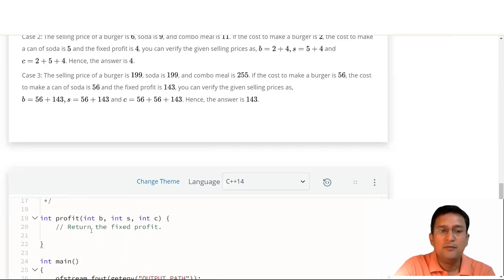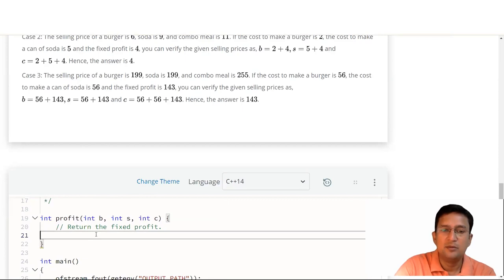When you cancel out the terms, you get the profit. So we have to return x plus y minus z.